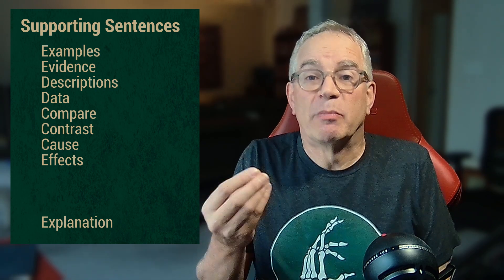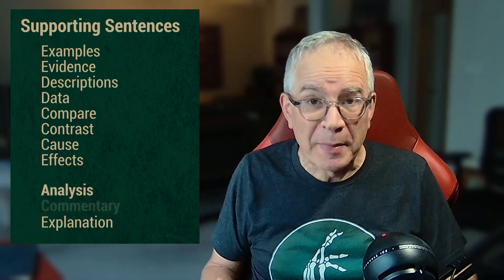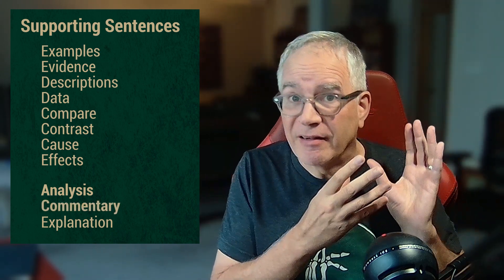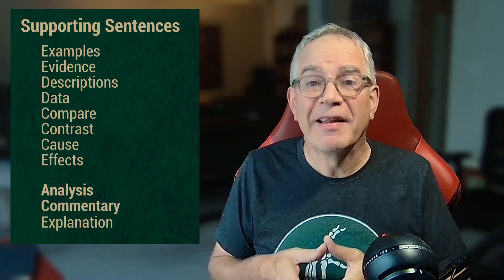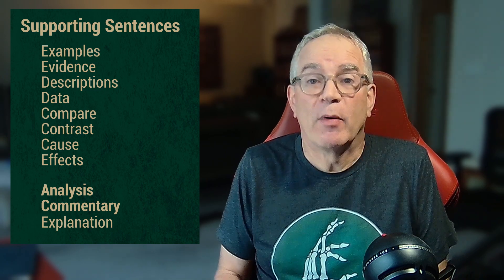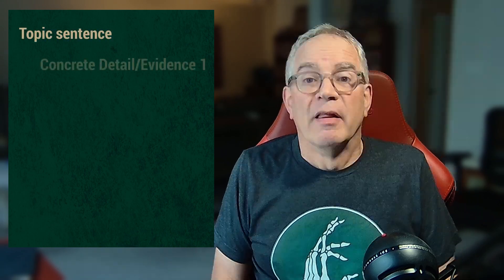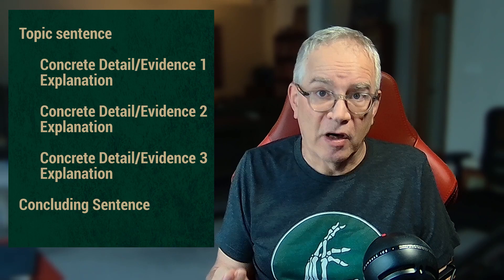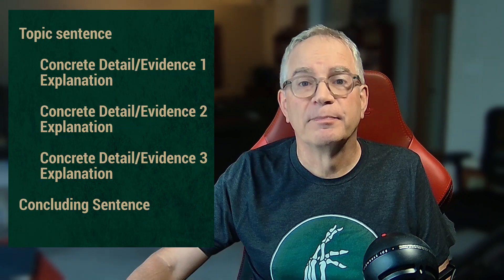Whatever you use as support, you will need to provide explanations or commentary. You need to explain what all that stuff means — not only so that your reader understands it, but also so that your reader will understand how it relates to or proves your topic sentence. There is a formulaic approach you may find useful to start with, and it may look something like this. For more advanced writers, you want to avoid formulas and go with a structure that best achieves the paragraph's purpose with this particular topic — and that's kind of where the art of paragraph writing comes in.